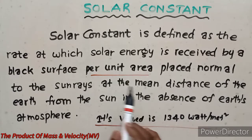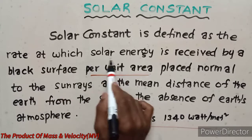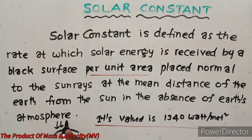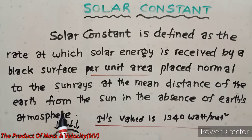Solar constant means the rate at which solar energy is received by a black surface. This black surface receives solar energy from the sun. So solar constant is defined as the rate at which solar energy is received by a black surface.